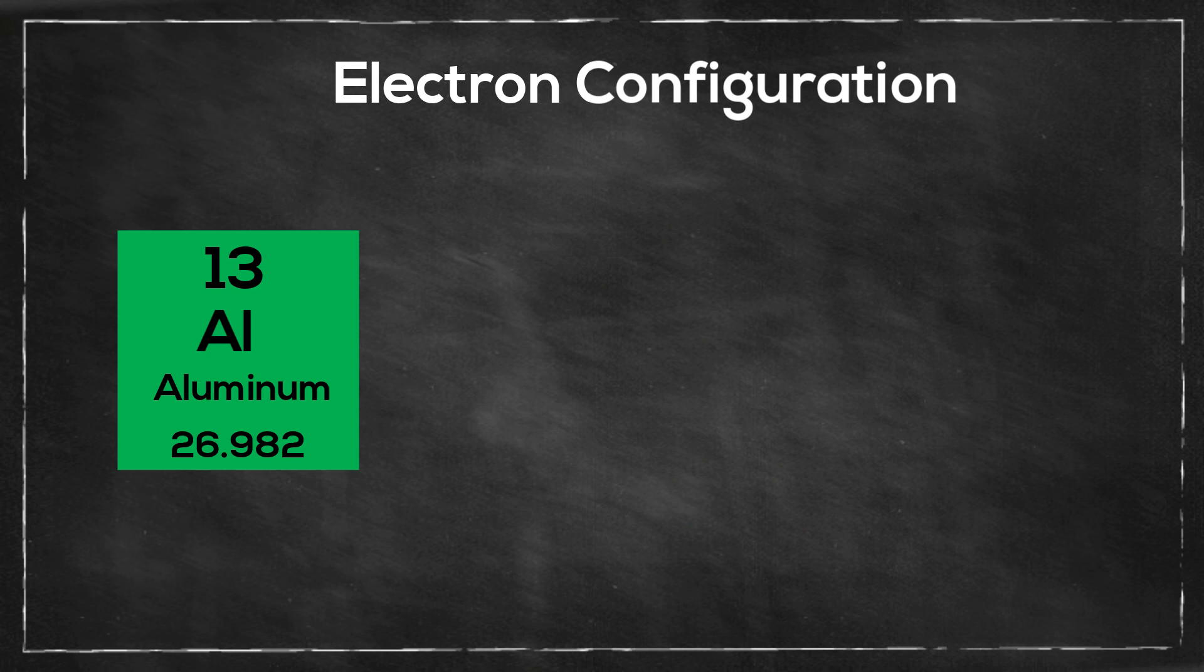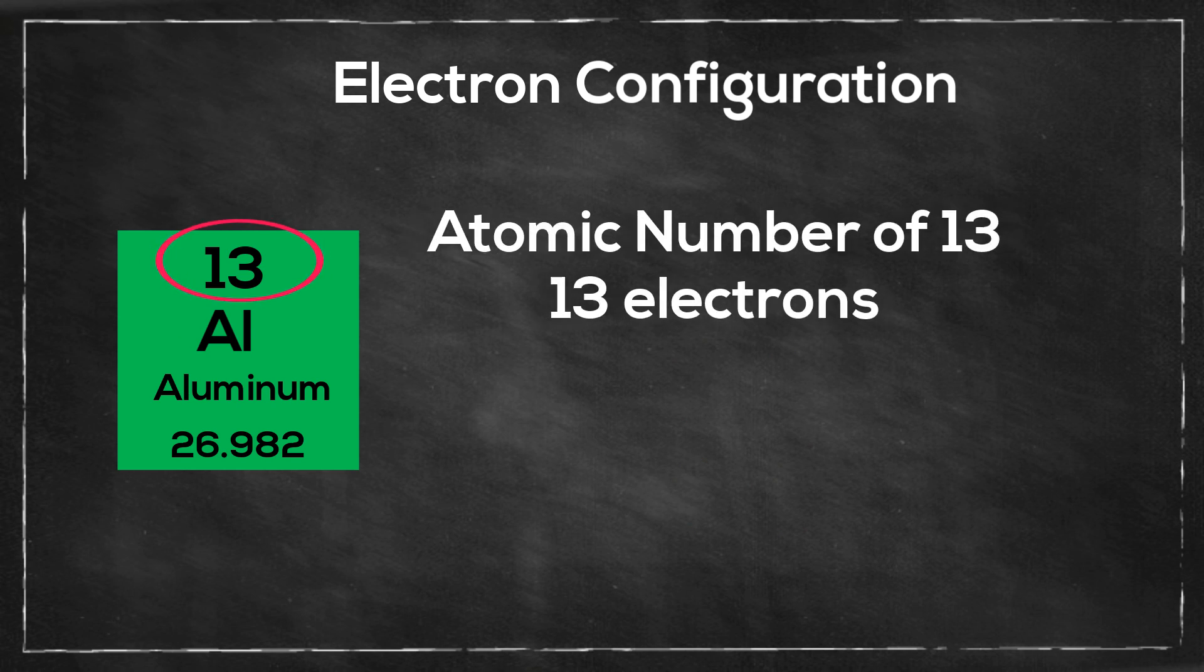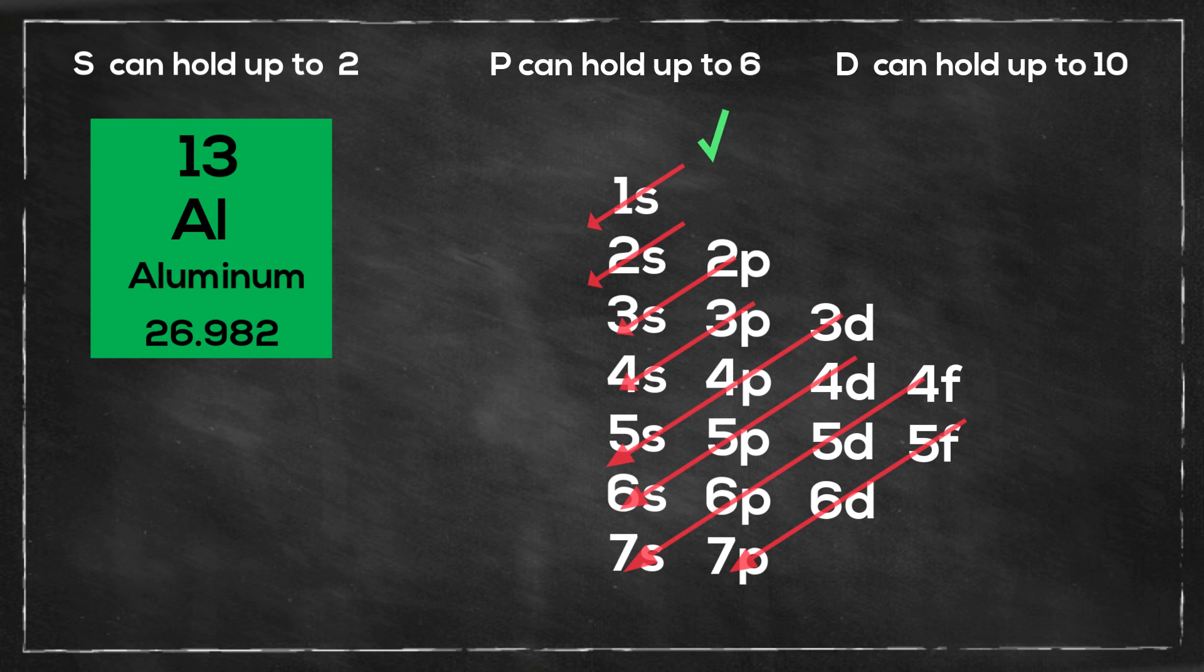So let's get started with aluminum. Aluminum has an atomic number of 13, so it has 13 electrons. So I will start at the 1s, and it can hold 2, so it will be 1s2.